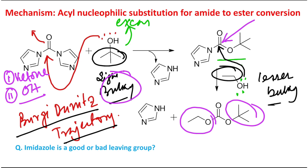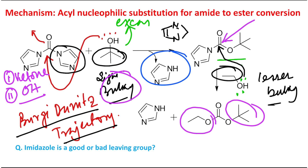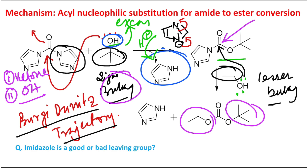In the second step, ethanol — being a less bulky alcohol — is allowed to attack the carbonyl center via the Bürgi–Dunitz trajectory, producing a mixed ester with ethyl on one side and tert-butyl on the other. Regarding the role of imidazole: after the first nucleophilic attack, an imidazole anion is produced, which is resonance stabilized. This anion then abstracts a proton from the alcohol oxygen (which becomes formally positive after nucleophilic attack), releasing one imidazole molecule.